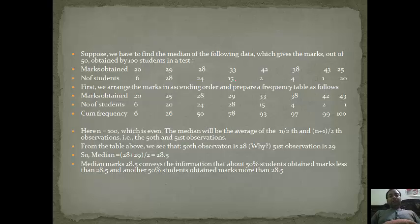Now suppose we have to find the median of the following data, which gives the marks out of 50 obtained by 100 students. 6 students obtained 20 marks, 20 students obtained 25 marks, 24 students obtained 28 marks, 28 students obtained 29 marks, and so on. Since we have to find the median, the first step is to rearrange it in ascending order. After rearranging, this becomes 20, 25, 28, 29, 33, 38, 42, and 43. Similarly, number of students will also be arranged.